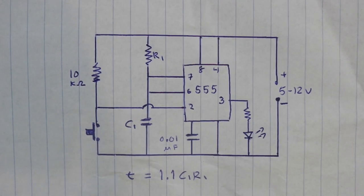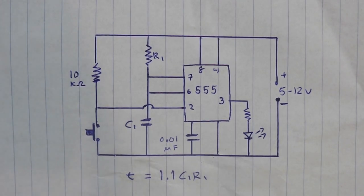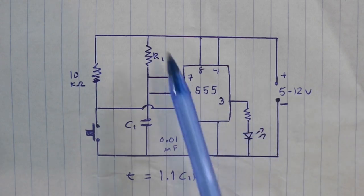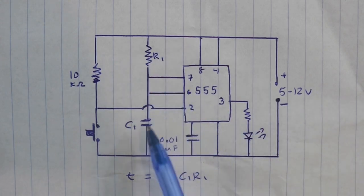Here are the connections of the timer in order for it to work on monostable mode. The time of the output signal is controlled by resistor 1 and capacitor 1. And this time is given by this formula: 1.1 times C1 times R1.